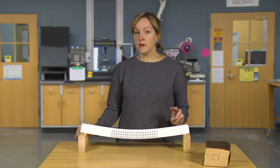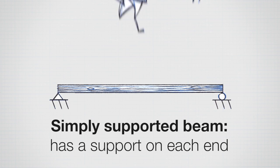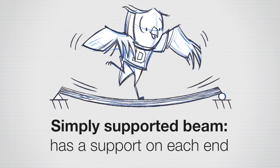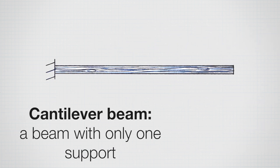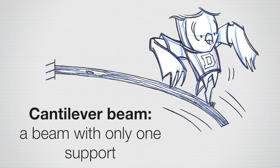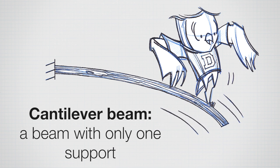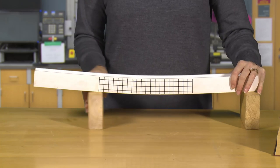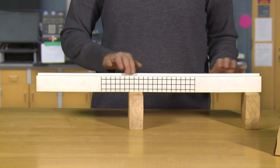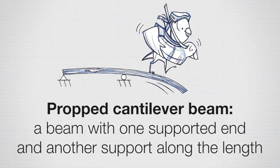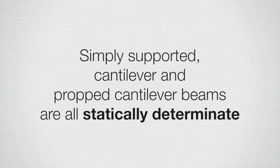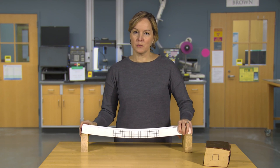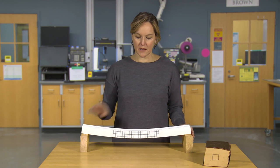In this course, we're going to focus on three types of beams: a simply supported beam with two supports at the ends; a cantilever beam with a single fixed support on one end; and a propped cantilever, which has two supports but one end cantilevering off. We focus on these three because they're all statically determinate, meaning the math behind them is fairly straightforward. Statically indeterminate beams require a bit more math.